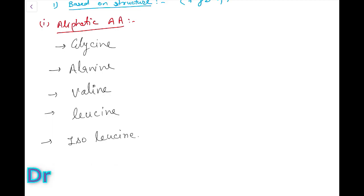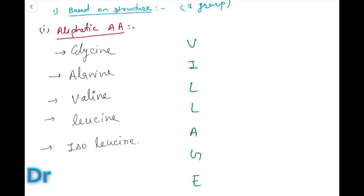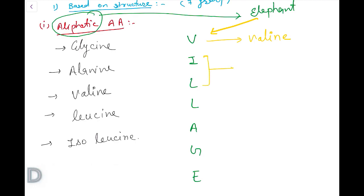How can we remember all these amino acids for a long time? I am giving a mnemonic for this. You can remember aliphatic amino acids by the mnemonic 'VILLAGE.' Aliphatic sounds similar to 'elephant' in pronunciation, and we can say the elephant is living in the village.